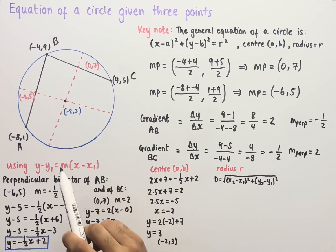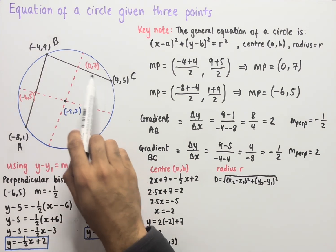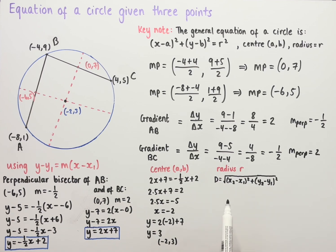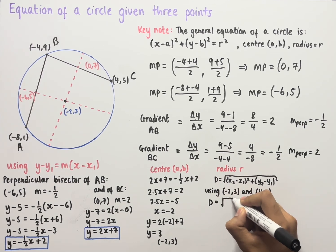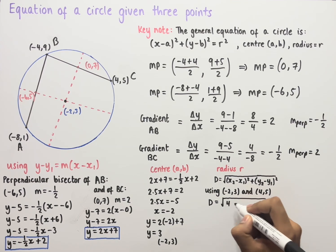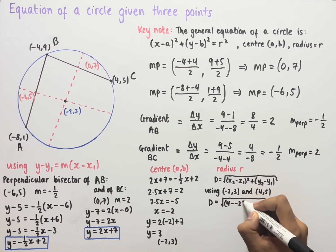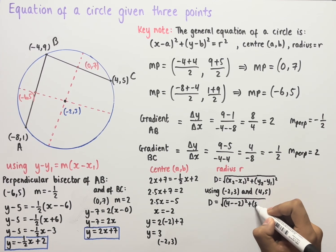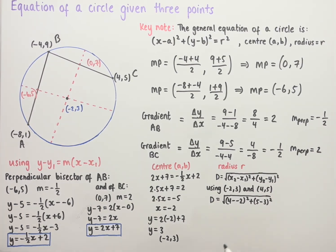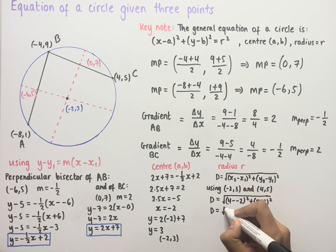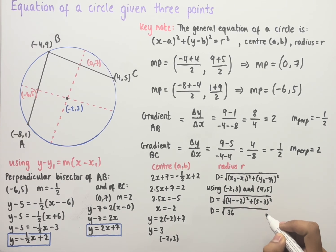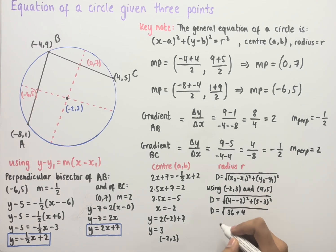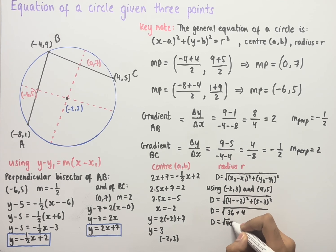The radius is the distance from the center to a point on the circumference. Using the center (-2, 3) and point C (4, 5), the distance formula gives d = √[(4 - (-2))² + (5 - 3)²] = √[6² + 2²] = √[36 + 4] = √40. So the radius equals √40.